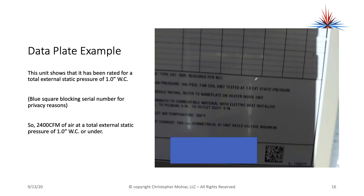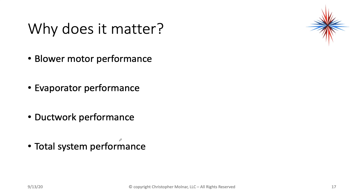There's one more thing to find on the data plate: what the unit was tested at for external static pressure. The unit is rated for 1.0 inches water column total external static pressure. So 2,400 CFM of air at a total external static pressure of 1.0 inches water column or under. This all goes into blower motor performance, evaporator performance, ductwork performance, and total system performance.